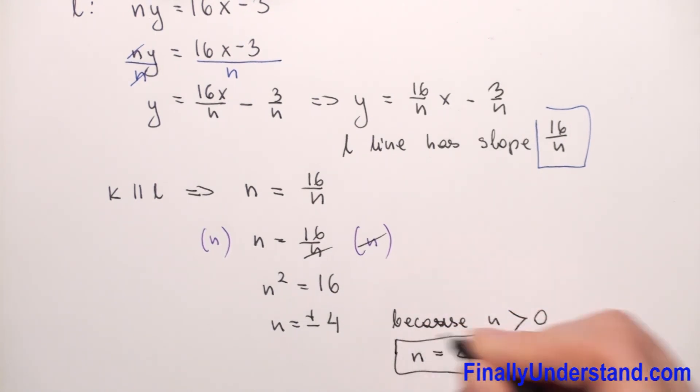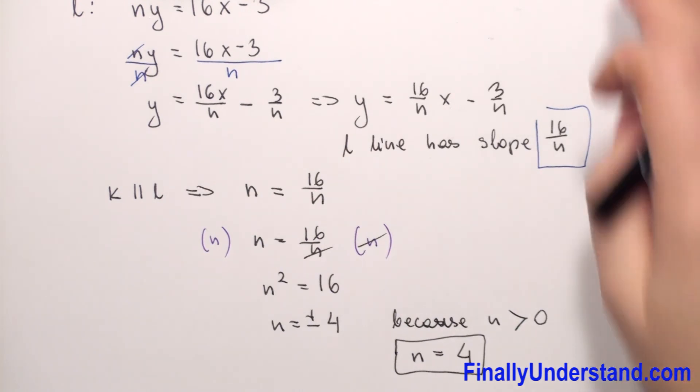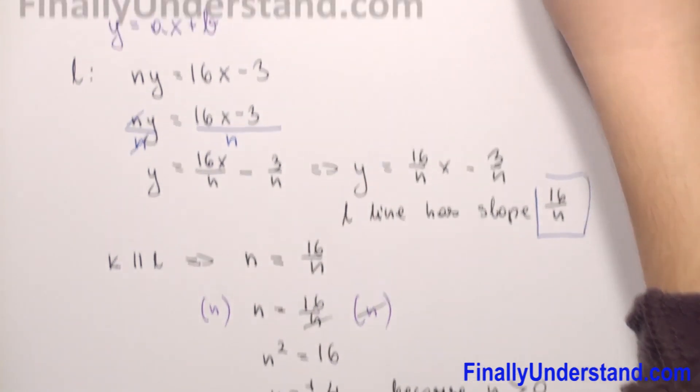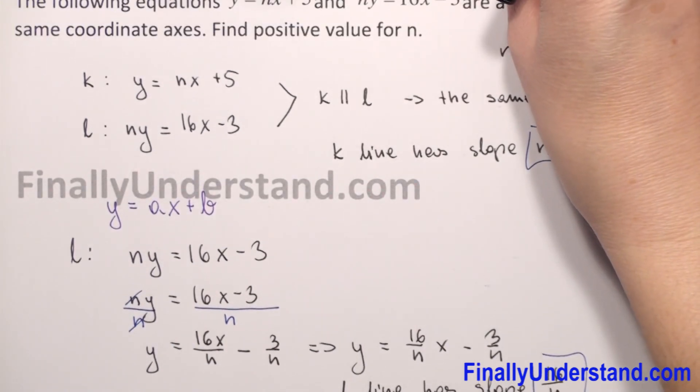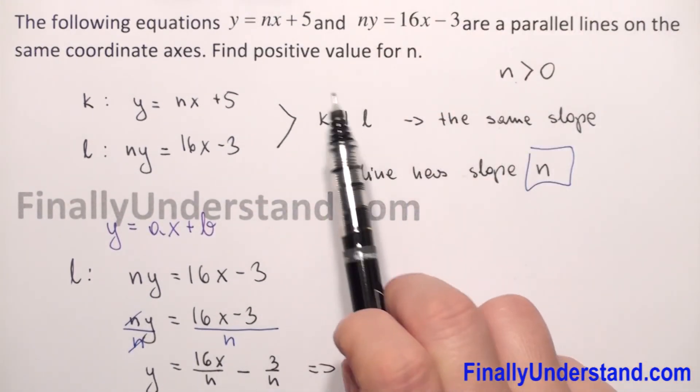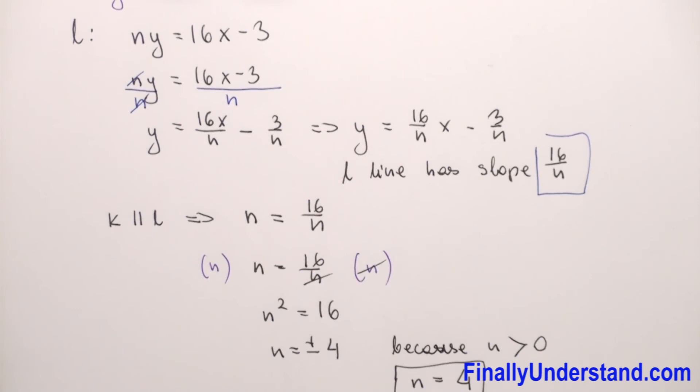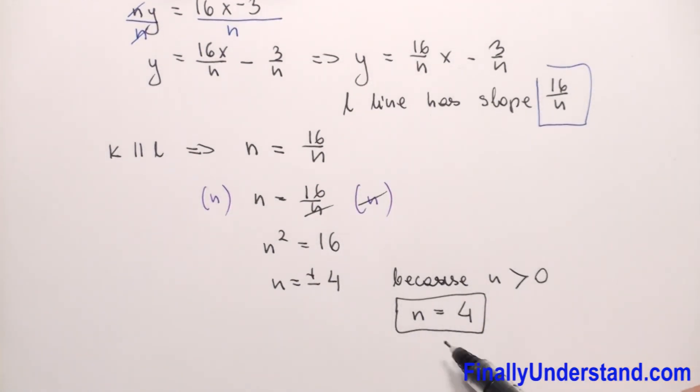This is my solution. Why? Because in our problem we need to find only the positive value for n, and n > 0, so I choose only 4.